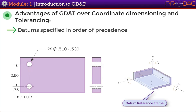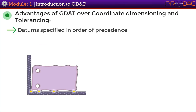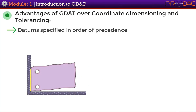A part dimensioned this way can be placed in the datum reference frame in either one orientation, or another way where the left edge is resting against the vertical face. In GD&T, this is taken care of by defining the datums in the order of their importance, so there is never any ambiguity while considering datums for measurements.